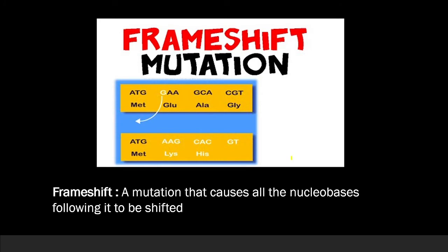What does frameshift mutation mean? In frameshift mutation, for example, ATG codes for methionine. When a deletion of one nitrogen base occurs, the reading frame changes completely, producing different amino acids — such as glycine, alanine, histidine, glutamine, and lysine — compared to the original sequence. You can see that there are 4 amino acids in one frame and only 3 in another, and they differ because the frame has changed. This frame change happens because of deletion of one nitrogen base.